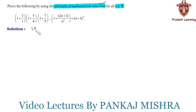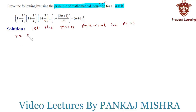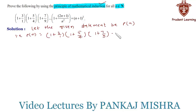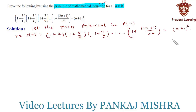Let the given statement be P(n), that is: P(n) = (1 + 3/1) × (1 + 5/4) × (1 + 7/9) all the way up to (1 + (2n+1)/n²) equals (n+1)².